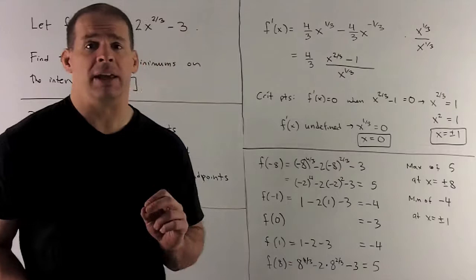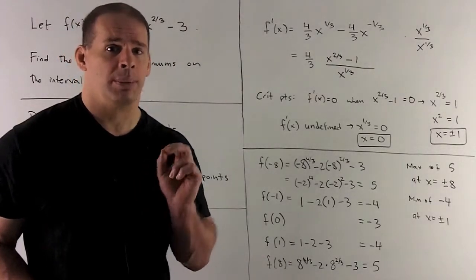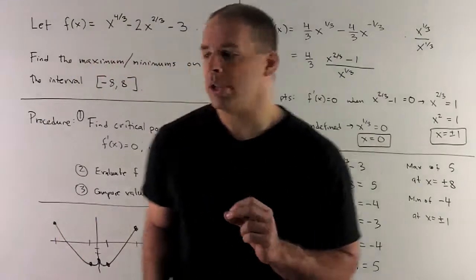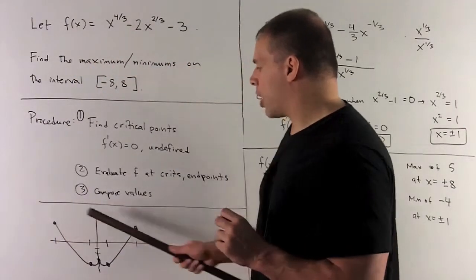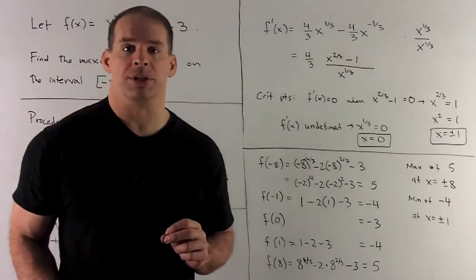So the maximum is going to be 5, and it's going to occur at the endpoints, x = ±8. We notice our graph already told the tale there for the maximums. Maximums occur at the endpoints.